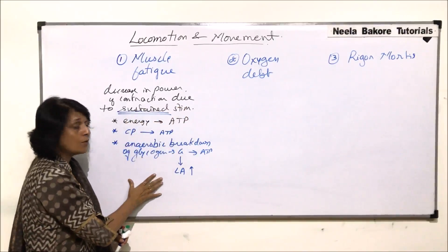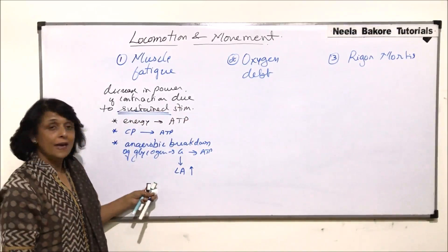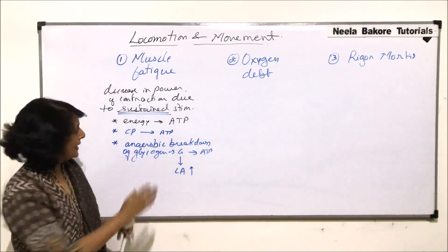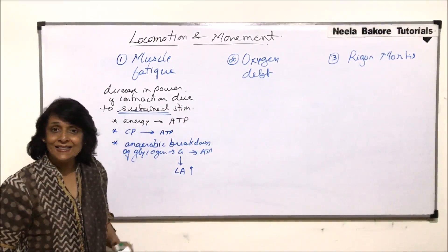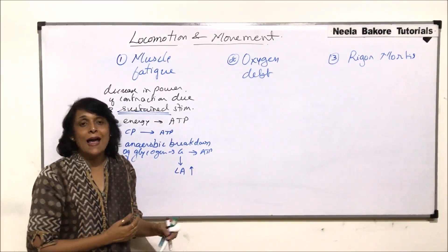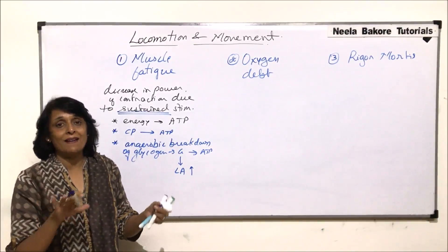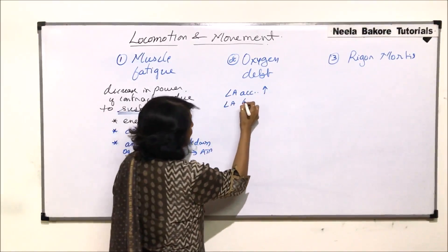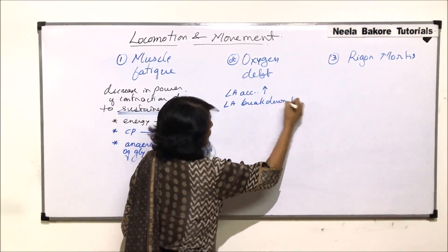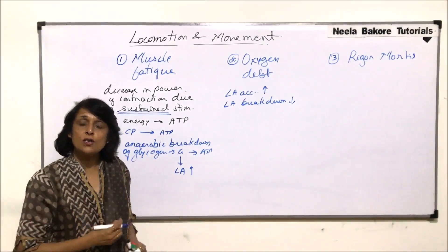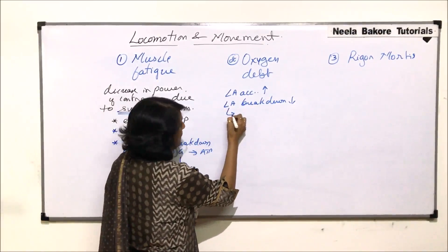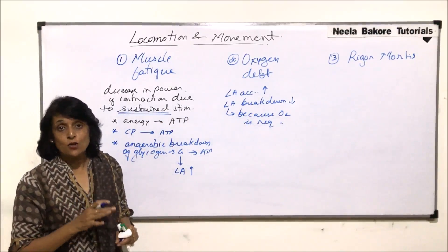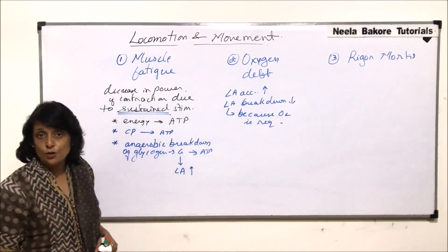Now the muscle has stopped contracting. This lactic acid has to be removed. This leads us to the second term: oxygen debt. It is in continuation with the first stage. Lactic acid production is higher or more as compared to its breakdown, so there is a disparity. Lactic acid breakdown is less because oxygen is required for the breakdown of lactic acid, and some oxygen is also required for the generation of ATP.